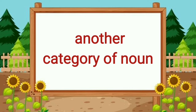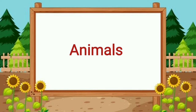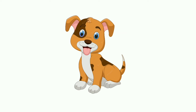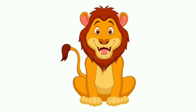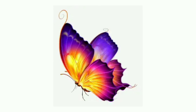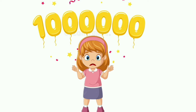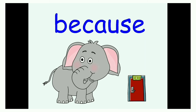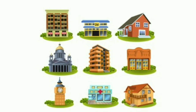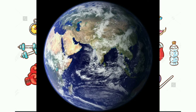Another category of noun: animals. Animals also have names such as dog, lion, parrot, elephant, butterfly and many more. There are millions and millions of nouns because there are millions and millions of people, places and things in this world.